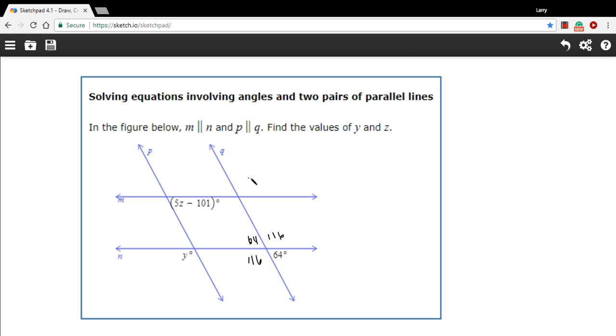And then what's true here is also true up here because n and m are parallel. And then what's true over here is going to be true over here because p and q are parallel. So I can fill all that in over here, 64 and, aha, 64 down here.